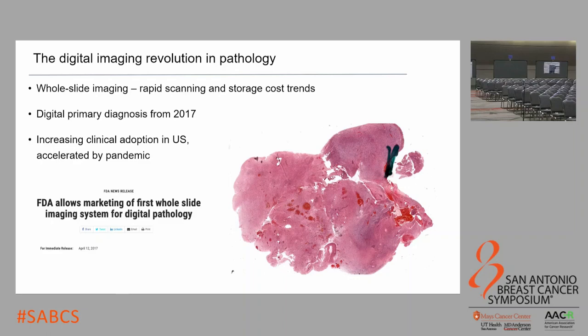Digital pathology was approved by the FDA for primary diagnosis in 2017, and since then it's had increasing clinical adoption in the U.S. This has been somewhat accelerated by the pandemic — a lot of people want to use digital pathology for remote sign out, and there's currently a waiver that allows that to happen. Some of the leaders in digital pathology, like Memorial Sloan Kettering and Ohio State, have scanned millions of slides. This is probably coming to a medical lab near you if it's not there already.